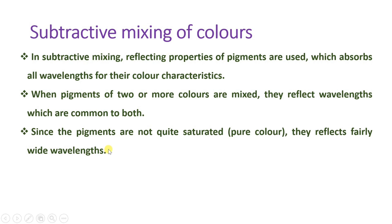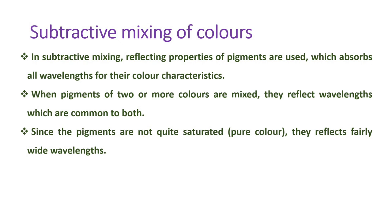In subtractive mixing, if you subtract the three major colors, you will find a black color, since saturated color is not quite achievable. White color gets eliminated, and you will find black color from the proper subtraction of the three different colors R, G, and B. In additive mixing, adding three colors results in white, while in subtractive mixing, because subtraction of white is happening, white gets nullified and the result is black color. This is because reflective properties are being used in subtractive mixing.